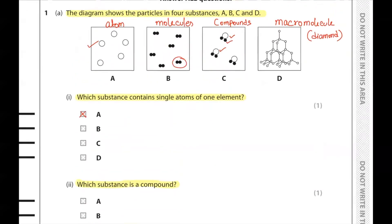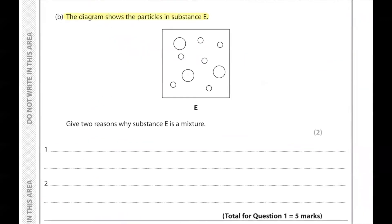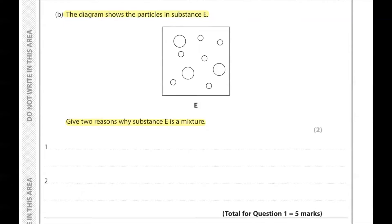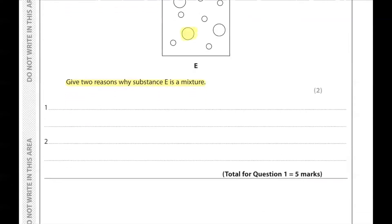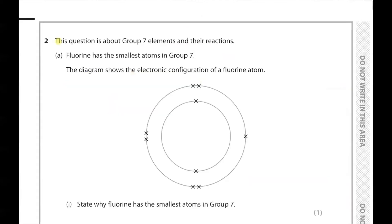Part b: the diagram shows the particles in substance e. Give two reasons why substance e is a mixture. We can see that there are two different elements present, and they are not chemically bonded together.